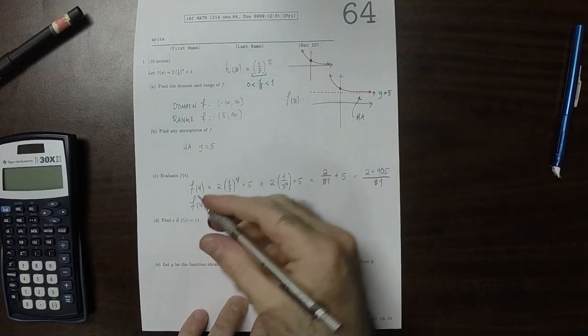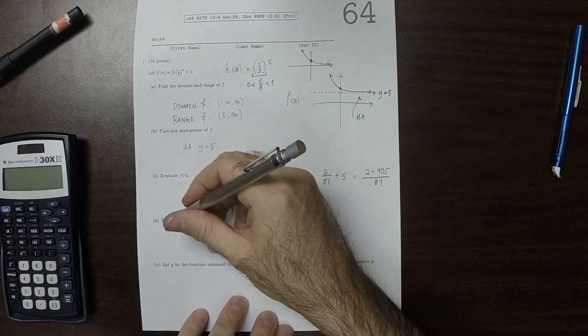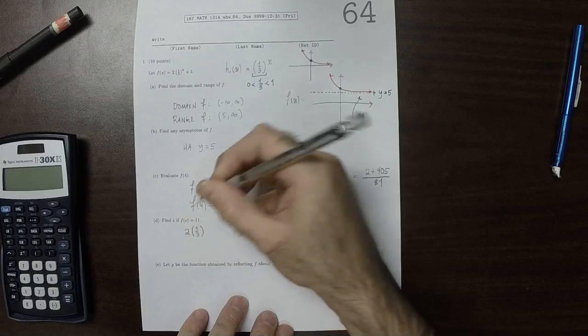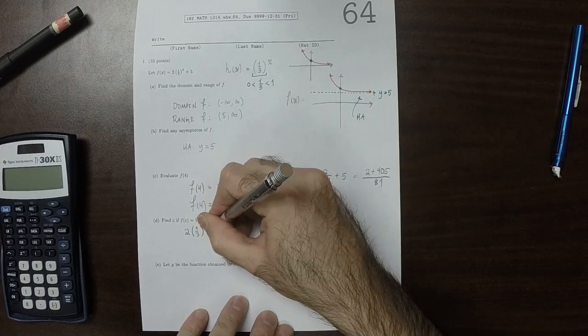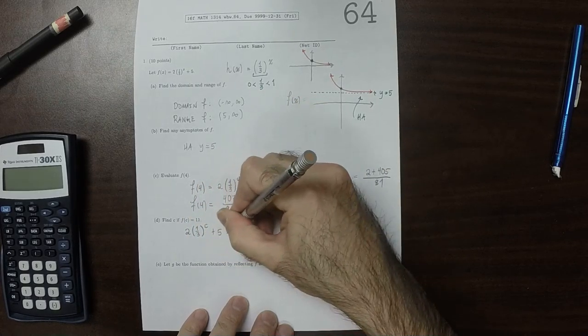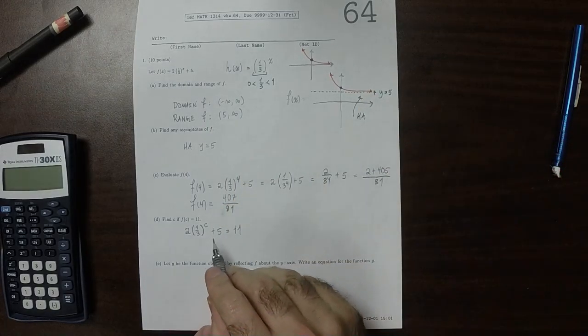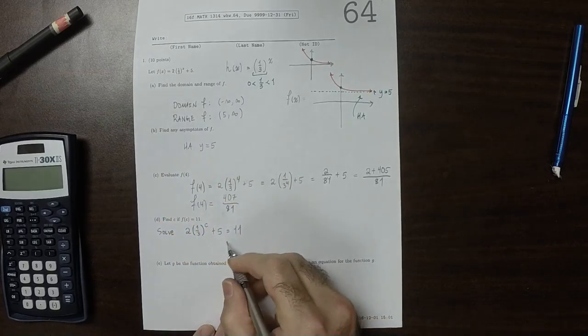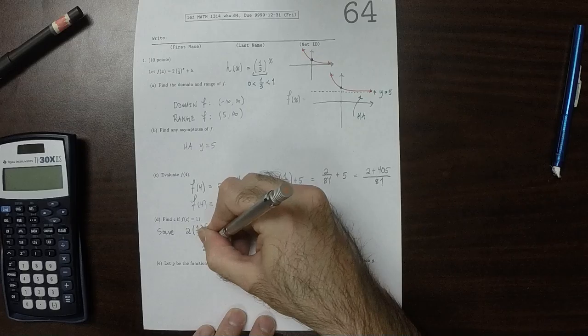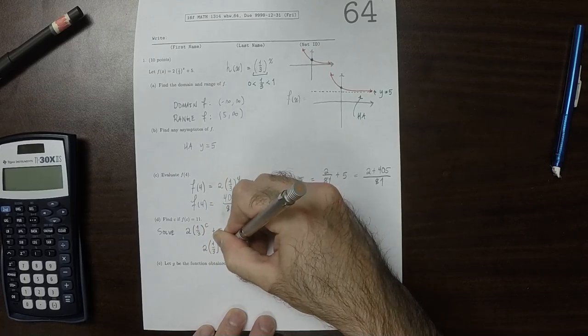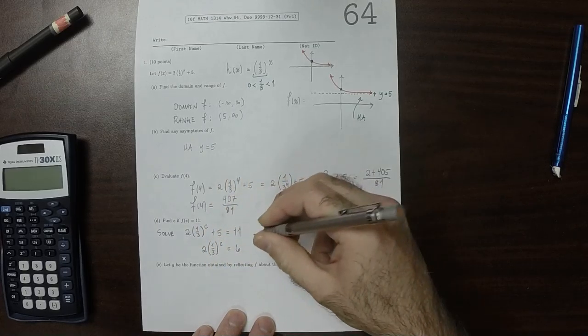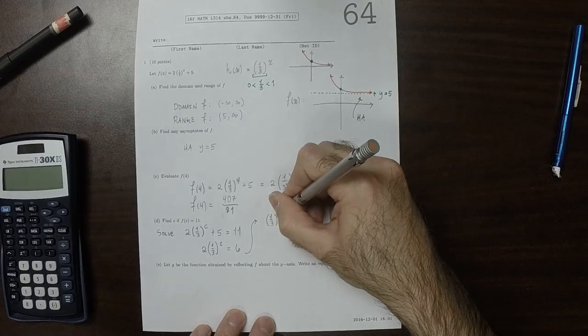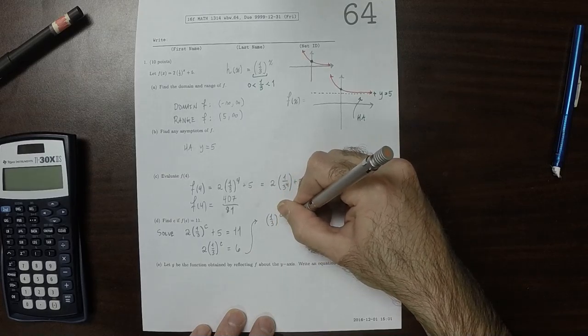Now we want to solve this. f(c), so that'd be 2 times (1/3)^c plus 5 equals 11. We want to solve this equation. Subtract 5 and divide by 2: (1/3)^c equals 3.